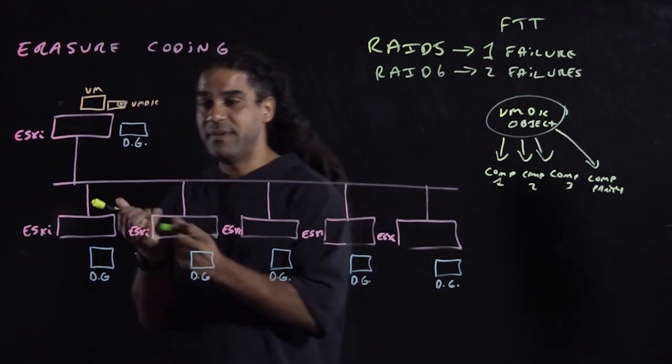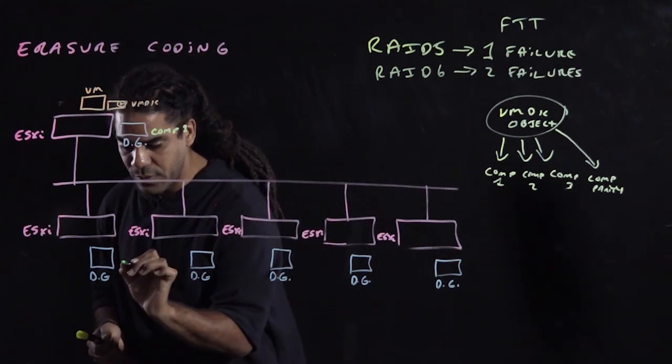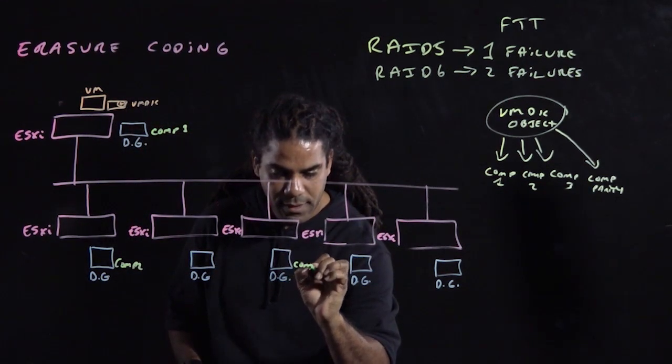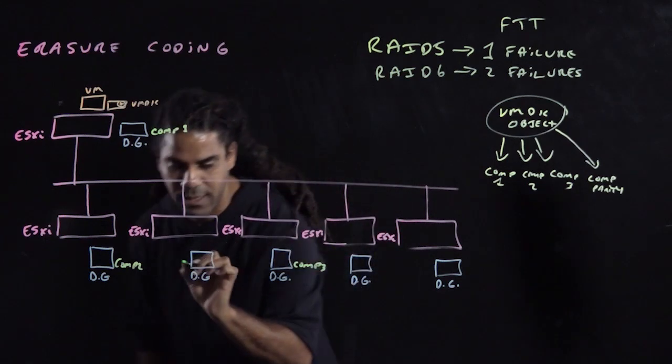So let's assume that vSAN decides to put component 1 here, and component 2 over here, and component 3, we'll put it over here, and the parity, we'll put it here.